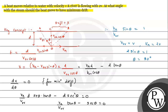We found θ = 30°, which is the angle the boat makes with the perpendicular to the stream. The question asks for the angle with respect to the stream direction. Therefore, the angle at which the boat must move to have minimum drift equals 30° + 90° = 120° from the stream direction. I hope you understood the solution. All the best!